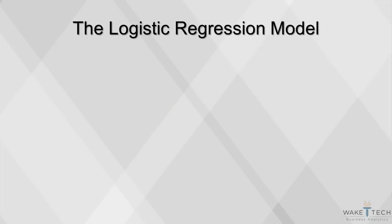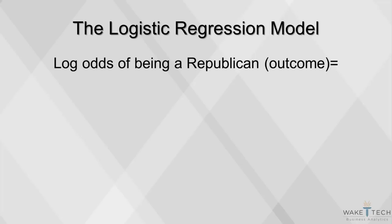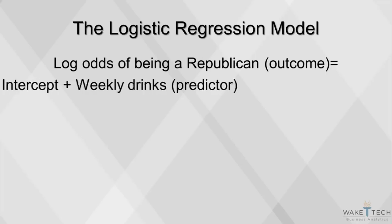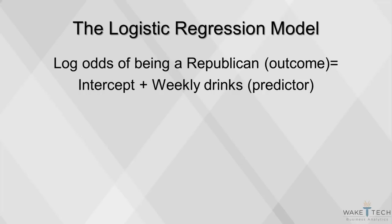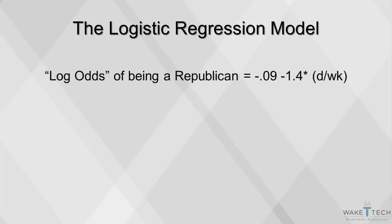The logit model to measure the impact of drinking on voter choice is set up as follows. The log of the odds ratio will be measured from data on x, where x here is the number of drinks per week. It's really important to understand that negative 1.4 is measuring the log of the odds ratio — that is, the log of the probability of being Republican divided by the probability of not being a Republican. To get the actual odds ratio, you have to compute the exponent, which is equal to 0.25.